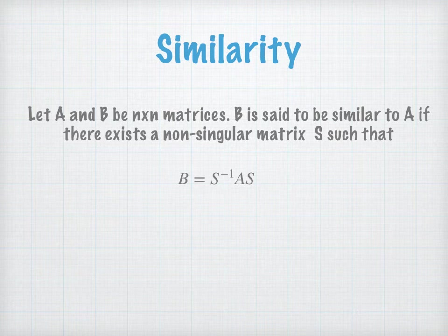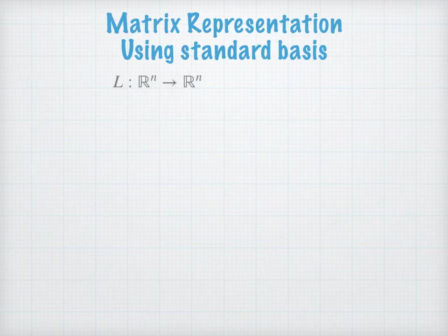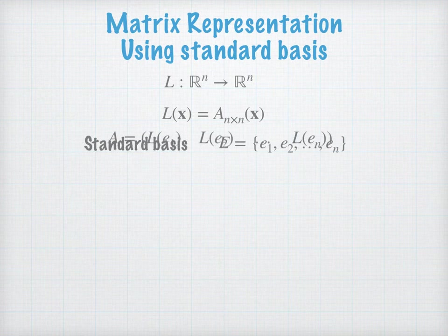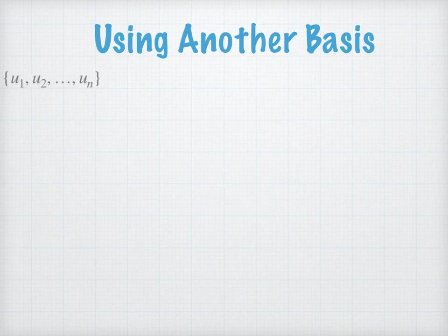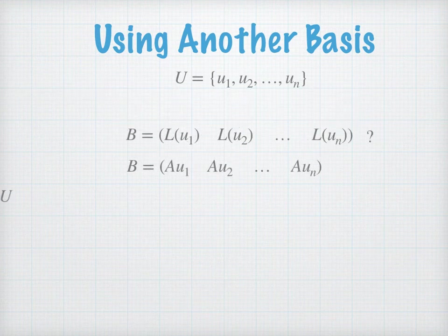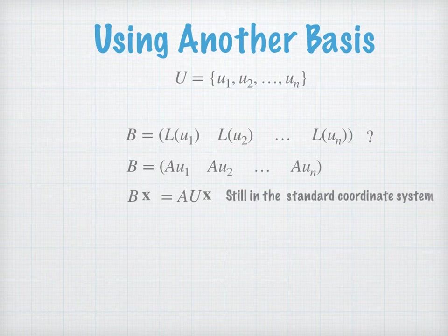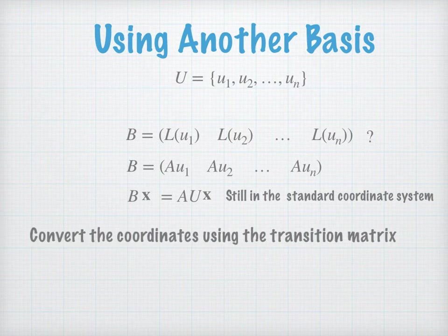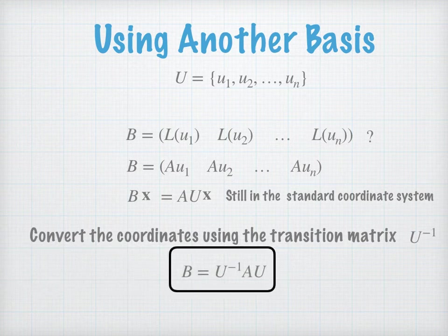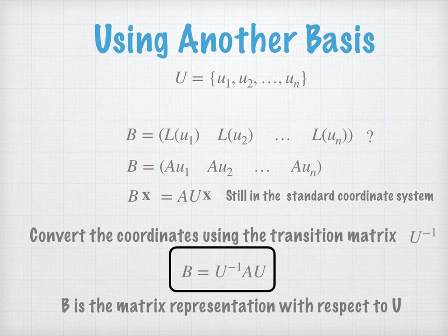As you can see, there is a relation between similarity and change of basis. When you have a standard matrix A and form a matrix representation of the same linear transformation using a different set of vectors — a different basis — you form that matrix representation using U inverse, A, and U. In this case, A and B are similar because there exists a non-singular matrix U such that B equals U inverse times A times U. This is the relation between linear transformations, their matrix representations, and similarity.